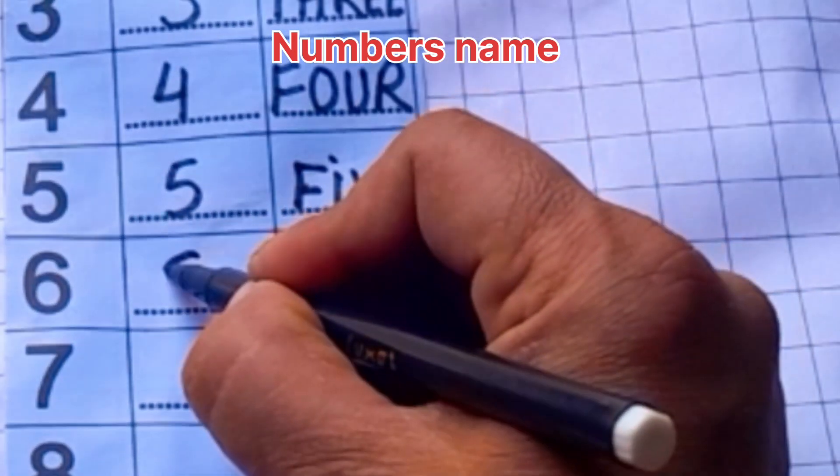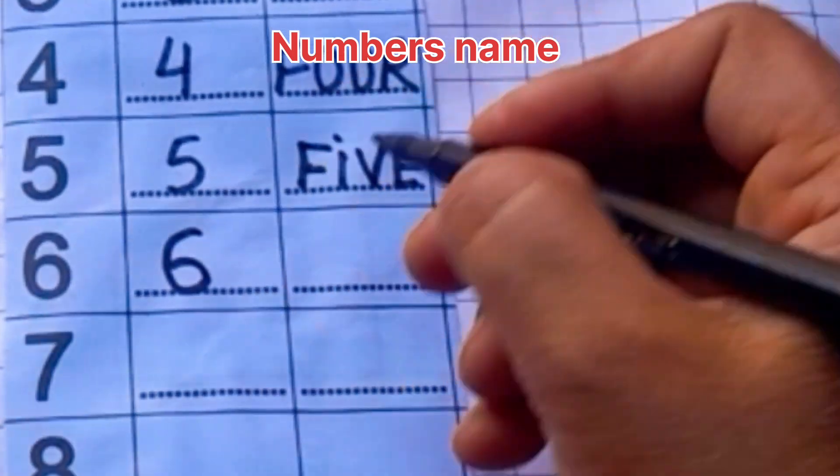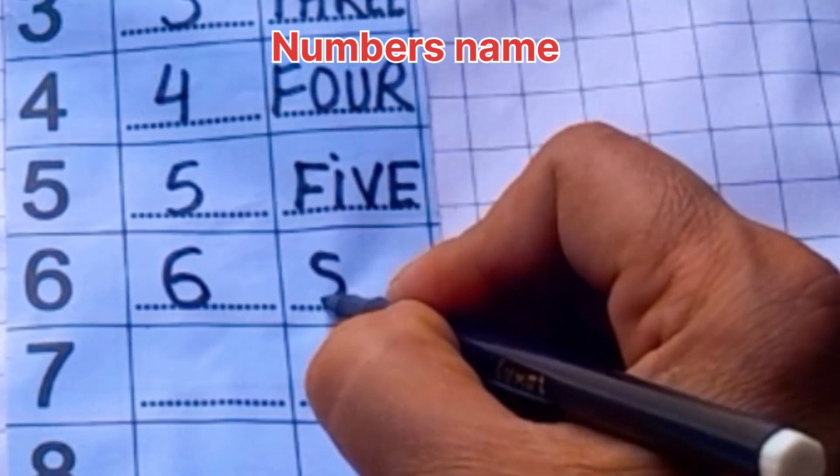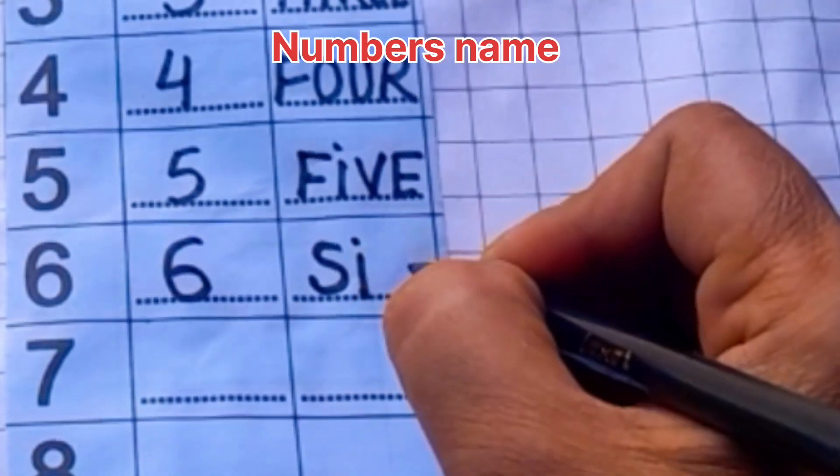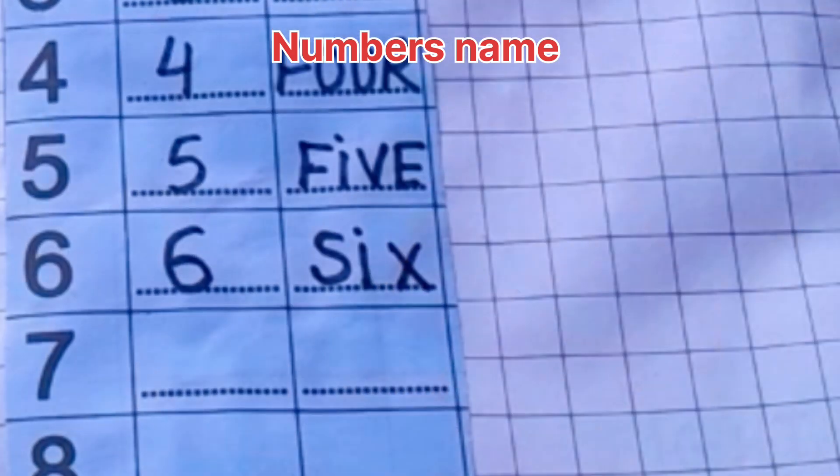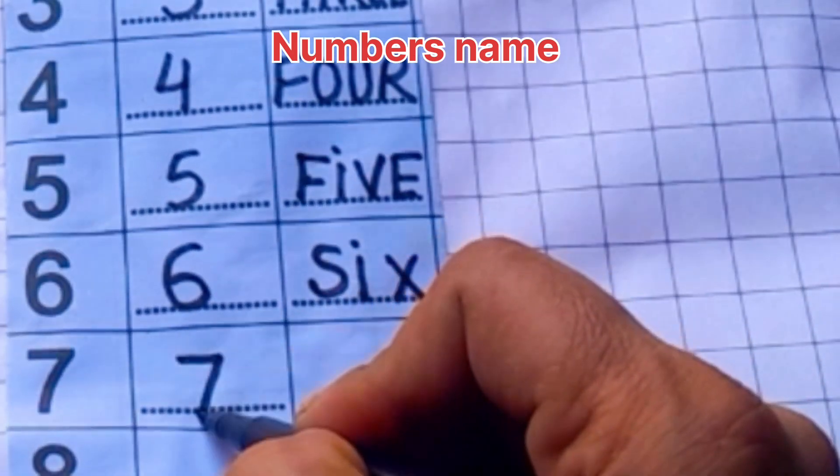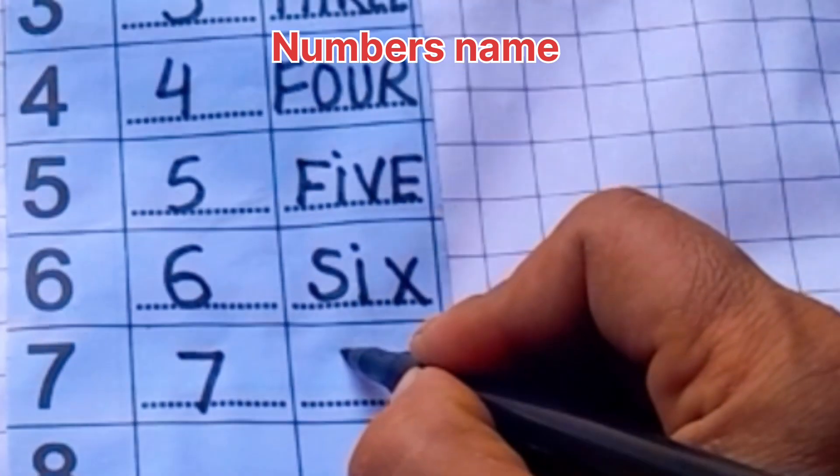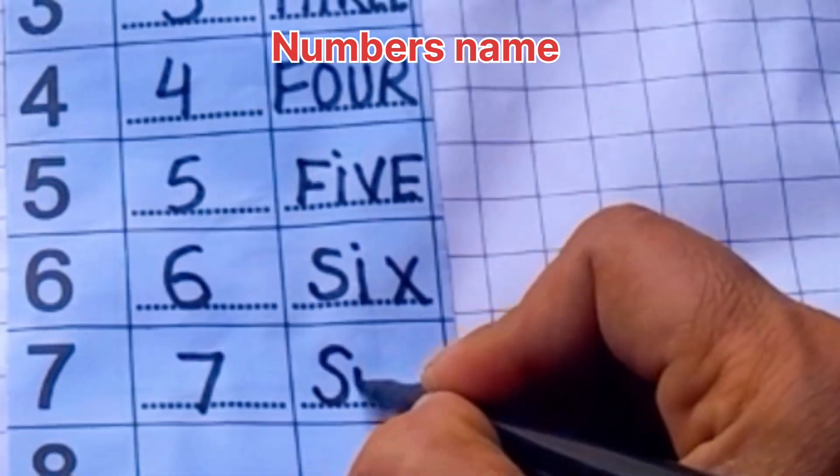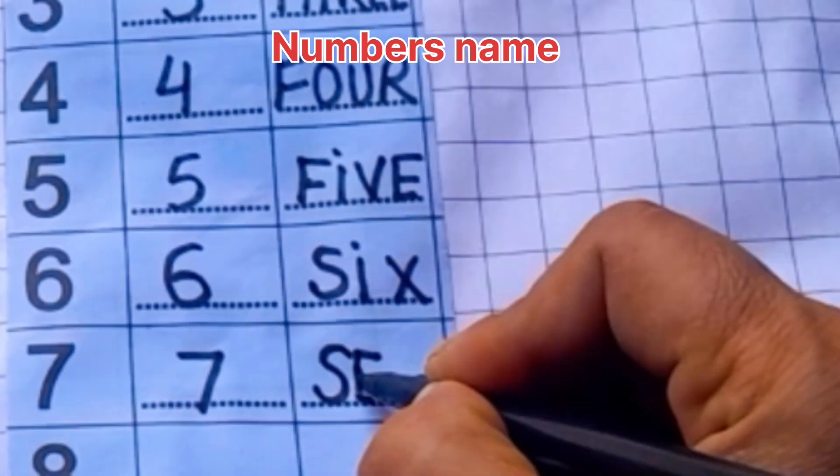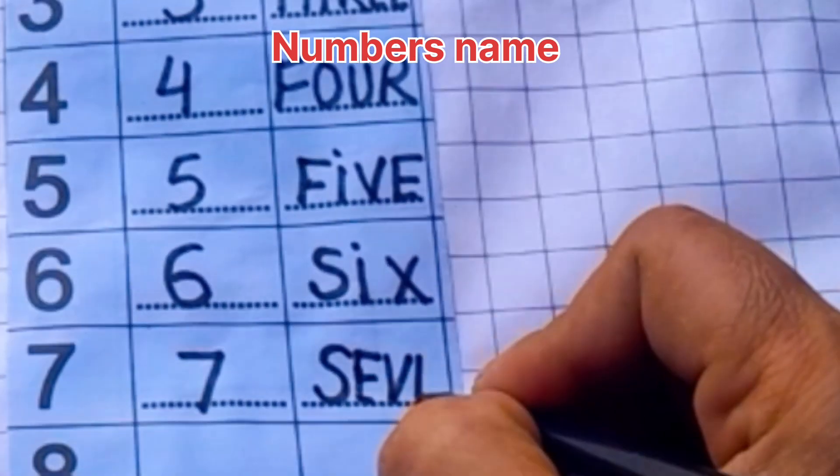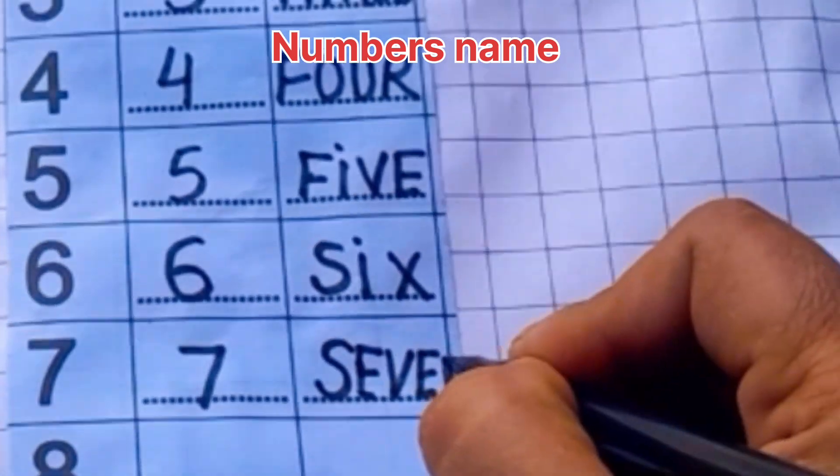Six. Six, S, I, X. Six, seven. That's very nice kids. S, E, V, E, N. Seven.